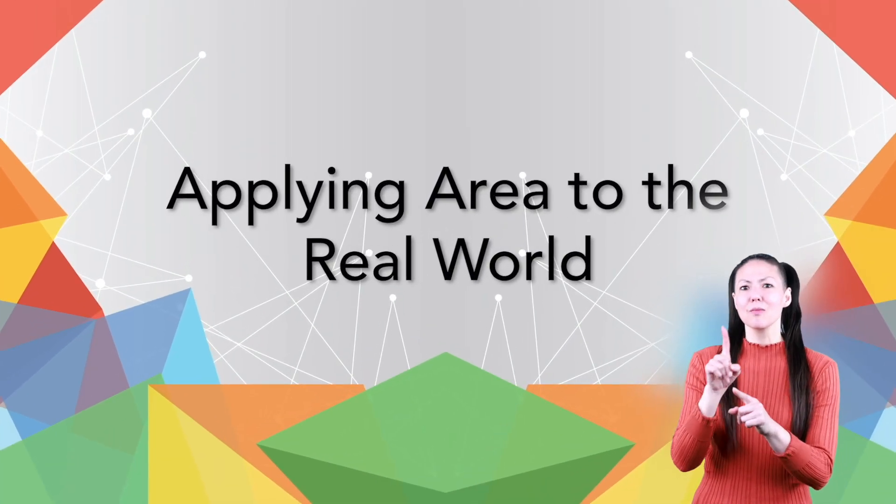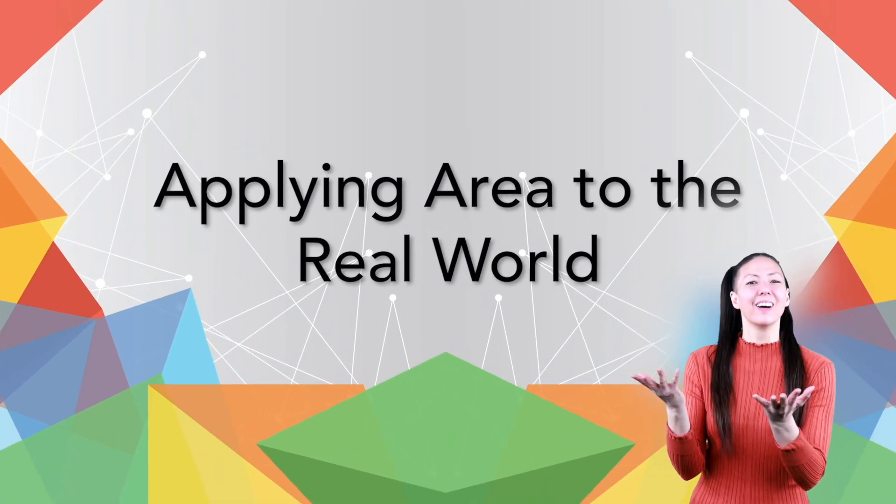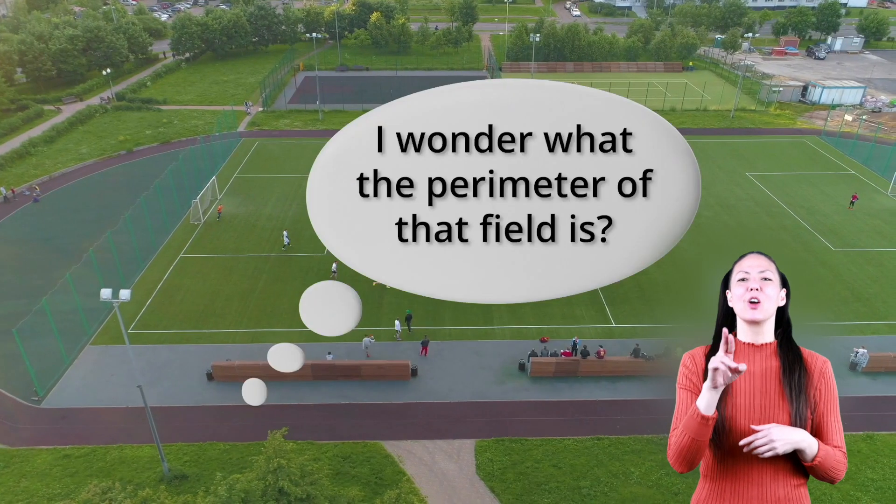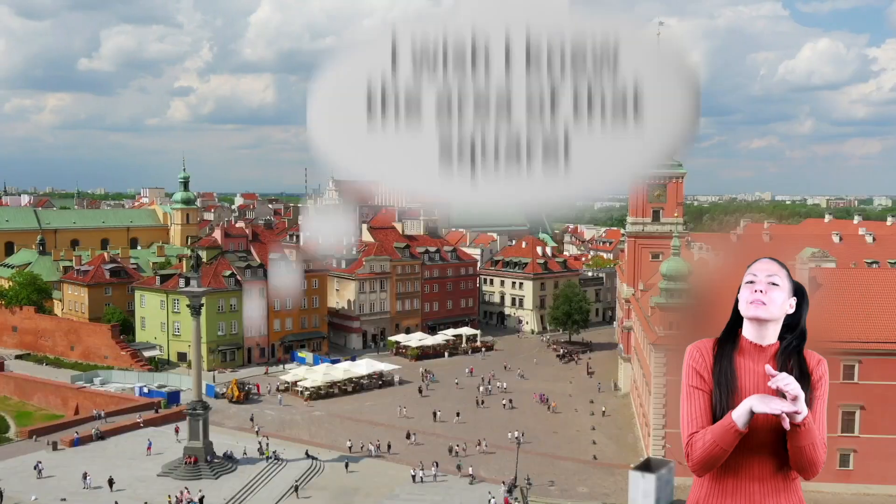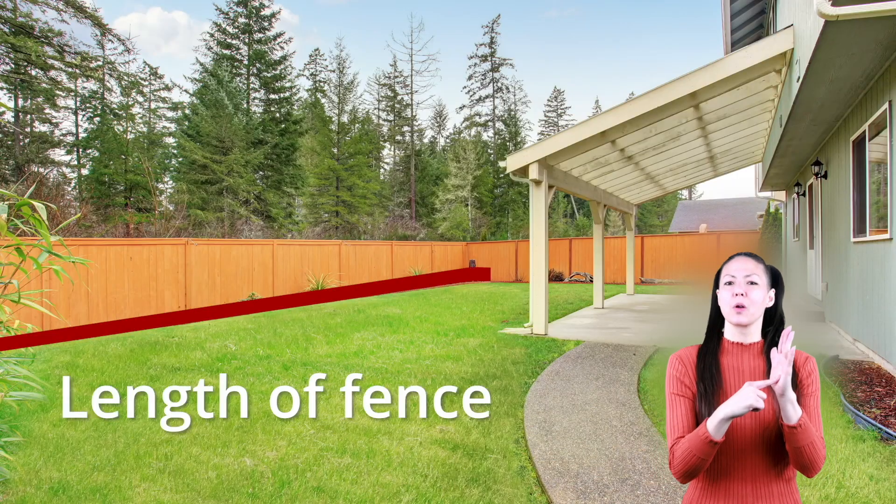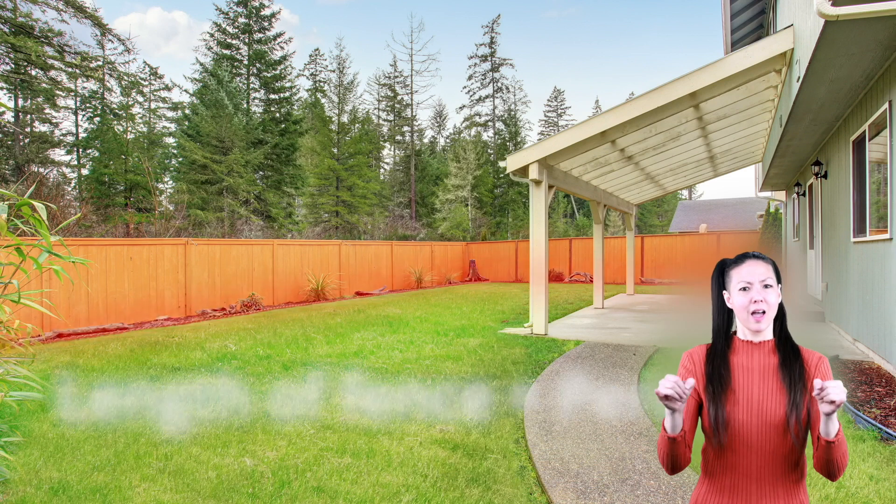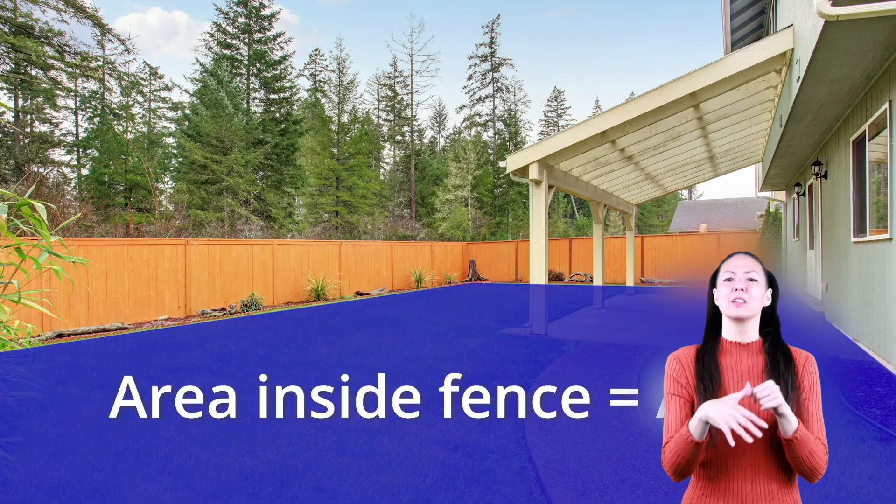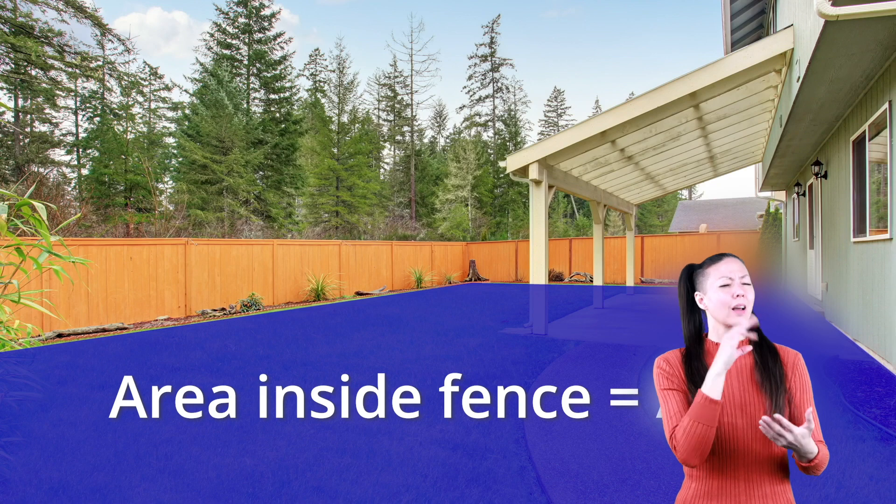Applying area to the real world for kids. You may have seen our video introduction to perimeter and area, in which we explain the basics about those two measurements. In the video we demonstrate that perimeter is a measurement of the outside line of a shape or space, and area is a measurement of the space inside.